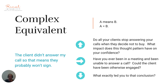Complex equivalents: A means B, or A equals B. So: 'The client didn't answer my call' — A equals 'they probably won't sign' — B. Let's go upwards: 'Do all your clients stop answering your calls when they decide not to buy? What impact does this thought pattern have on your confidence?' Sideways: 'Have you ever been in a meeting and been unable to answer a call? Could the client have been otherwise engaged?' Downwards: 'What exactly led you to that conclusion?' — getting into the specifics.